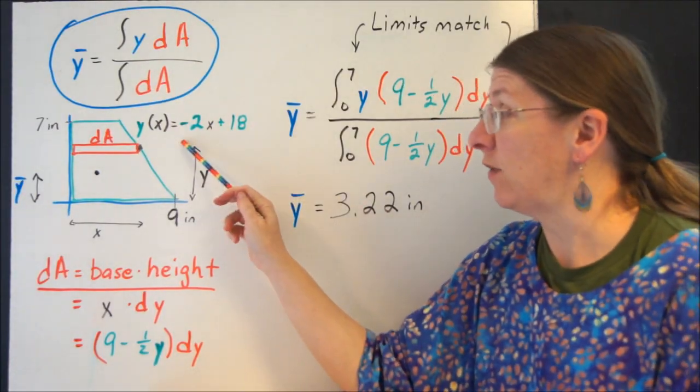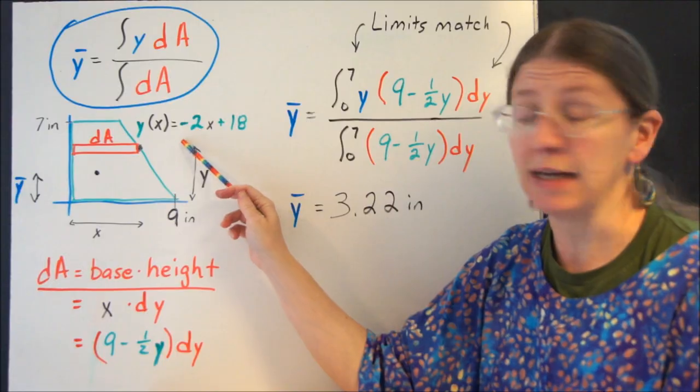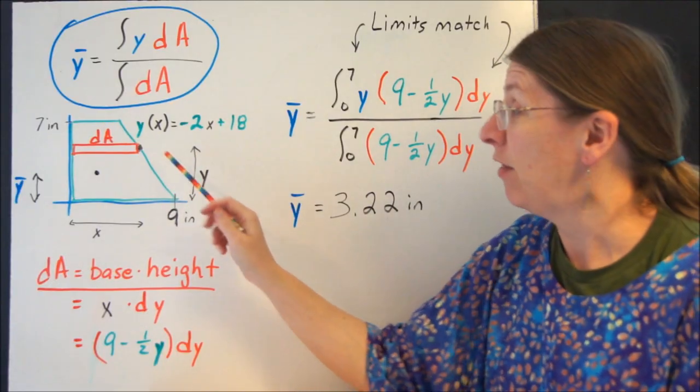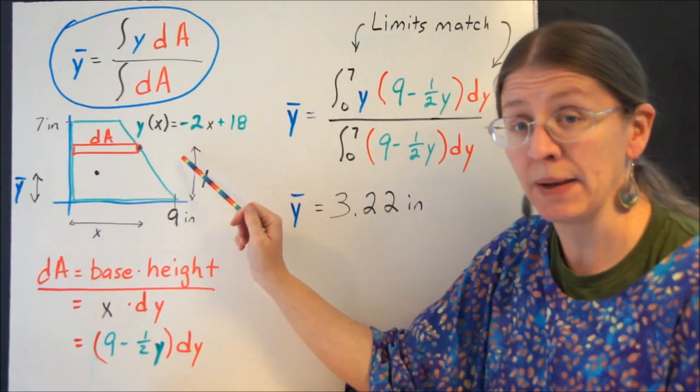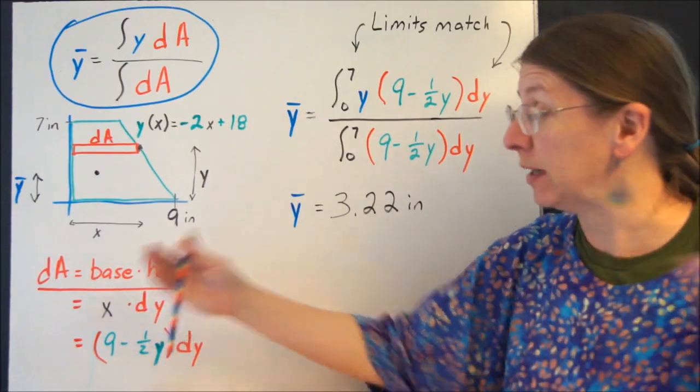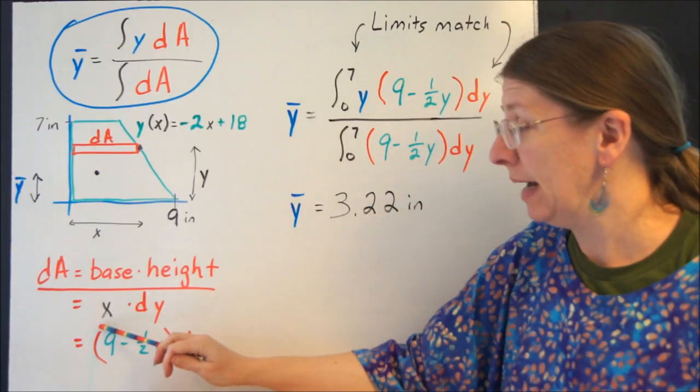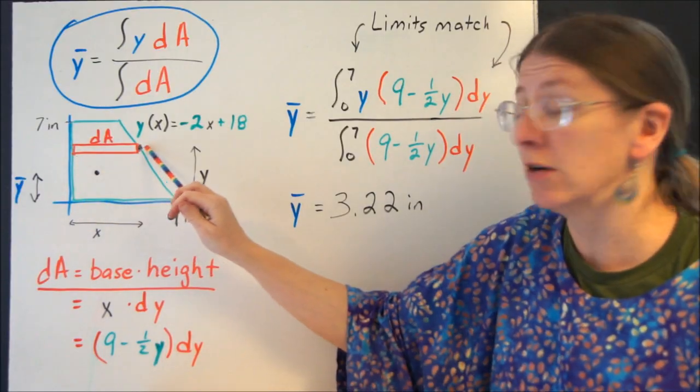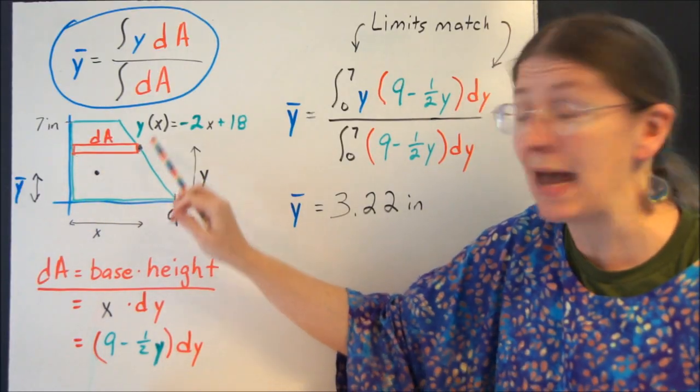So if I look at this function, this is -2x plus 18. That gives me this line. This point, or any point along here, is still xy. So I can still say that dA is base times height. Now I have a bigger base than a smaller height. So my base is to go from here to the point on the line would be x.